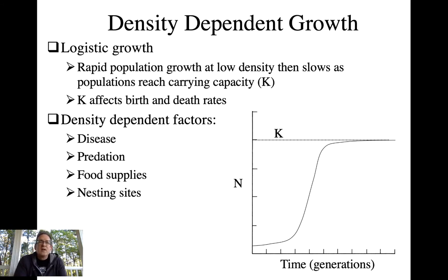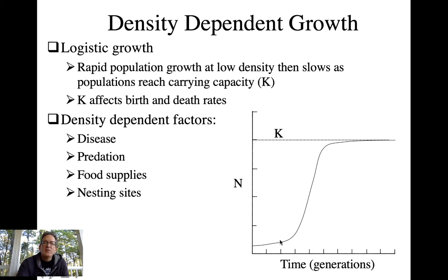Density-dependent growth leads away from exponential growth into a growth pattern called logistic growth — this S-shaped curve. If you look at the figure, there is this initial really rapid growth that's exponential, but then as it gets to this line right here — this is the line that represents carrying capacity — basically a measure of how many individuals of that species can be supported by the resources available in an area.